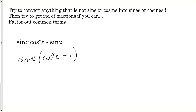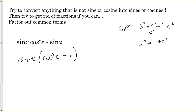Now notice we have cosine squared minus one. Remember the golden rule: sine squared plus cosine squared equals one. If you subtract cosine squared from both sides, sine squared equals one minus cosine squared. We have cosine squared minus one, so multiply both sides by negative one: negative sine squared equals cosine squared minus one. Therefore cosine squared minus one equals negative sine squared.